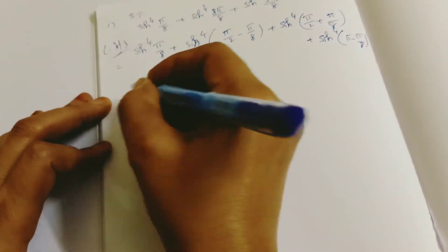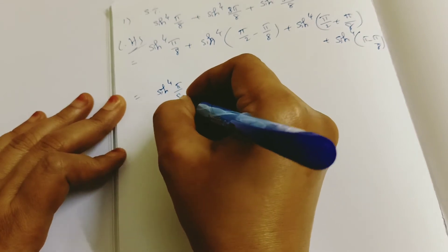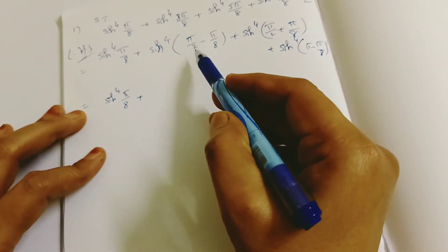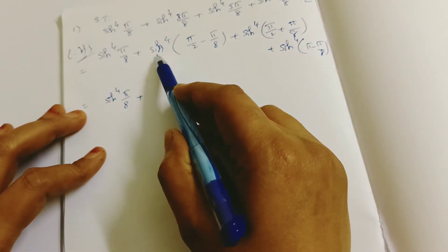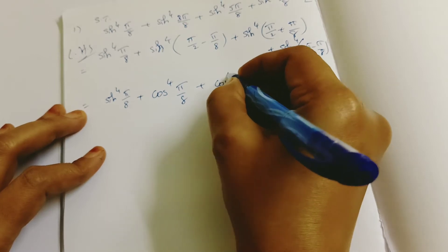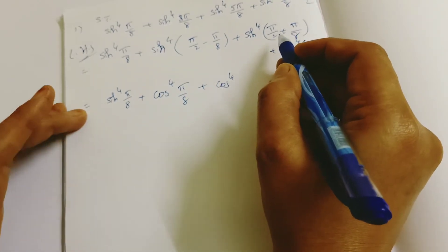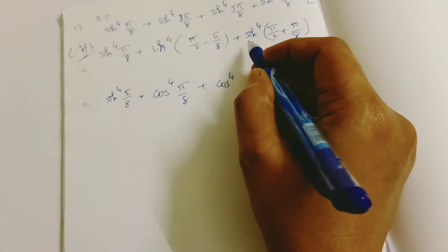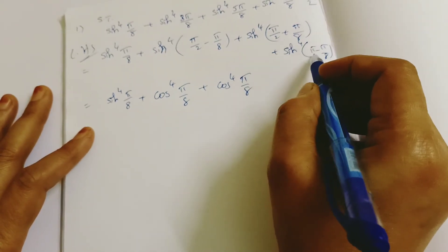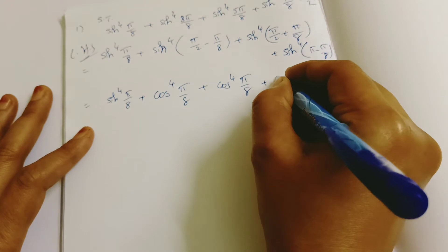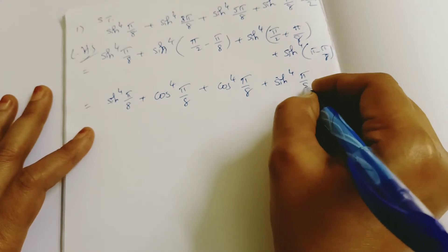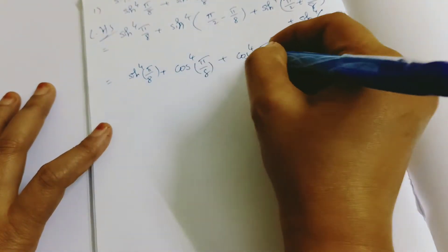Now sin⁴(π/8) plus — here π/2 is in the function. So how to convert? Since π/2 is there, the function will become cos. So we get cos⁴(π/8). Next, for sin⁴(5π/8): this is 90° plus θ (second quadrant), so sin remains positive with no change. And for sin⁴(7π/8): that is π minus π/8 — also second quadrant — sin remains as is, so sin⁴(π/8). All are angles only.